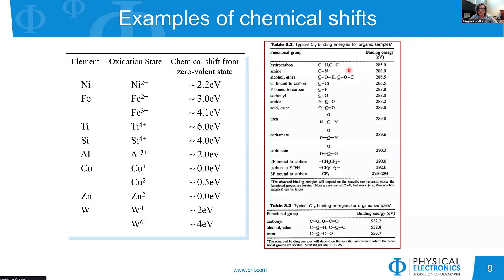Carbon is very rich in chemistry — carbon participates in organics and polymers in a variety of different chemical bond formations. Here's an example of organic samples showing what the chemical binding energy is when carbon is bonded to different environments. With the power of XPS and its sensitivity to chemical shift, you can also see how challenging it is because different types of moieties can result in the same binding energy shift. It's our task as scientists to identify this correctly based on full understanding of the structure.